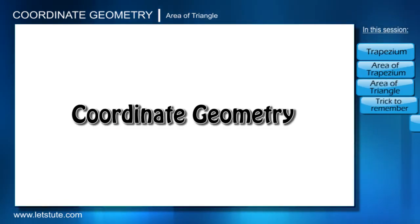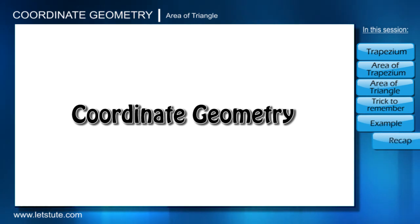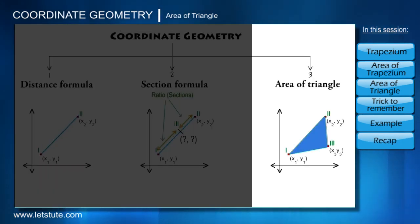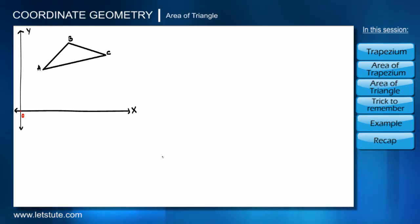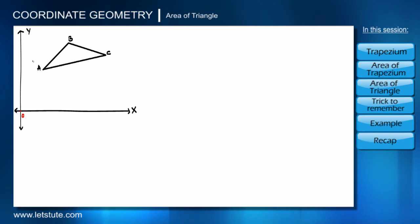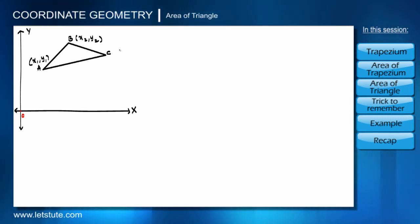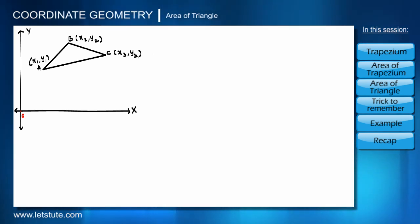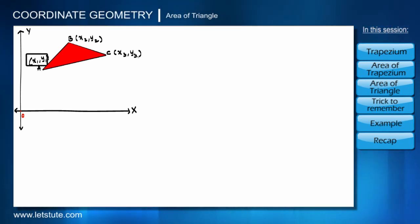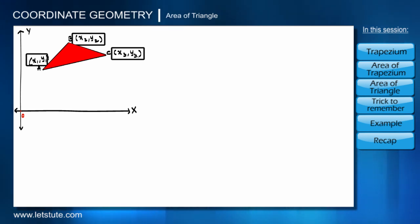In this session we are going to particularly talk about the third concept, that is area of triangle. Let's consider a triangle with vertices A, B, and C with coordinates x1, y1 for A; x2, y2 for B; and x3, y3 for C. We have to learn how to find the area of a triangle when we have information only about the coordinates of the vertices.